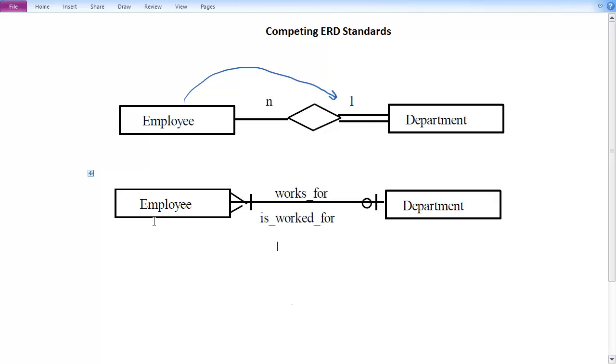A given employee can work for from zero, hence that zero there, to at most one department. That's compact, that makes sense, that's useful.